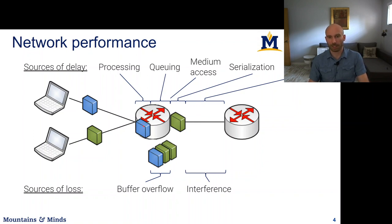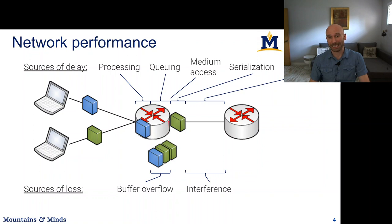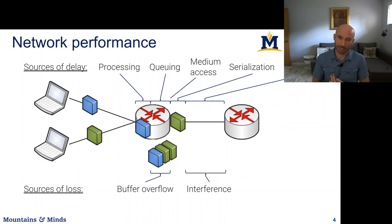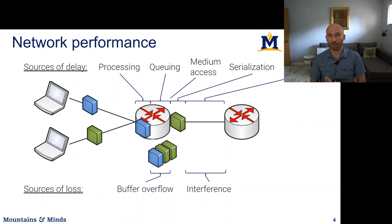Once we know what to do with the packet, the router schedules it for transmission on an outgoing link. That outgoing link has a buffer from which packets are picked up and transmitted. When processing is done, the packet goes into this buffer and has to wait to reach the front of the queue — that is the queuing delay. Once at the front of the queue, on a fiber link transmission starts immediately, but on a WiFi link you may need to wait for others to finish transmitting — that's the medium access delay.